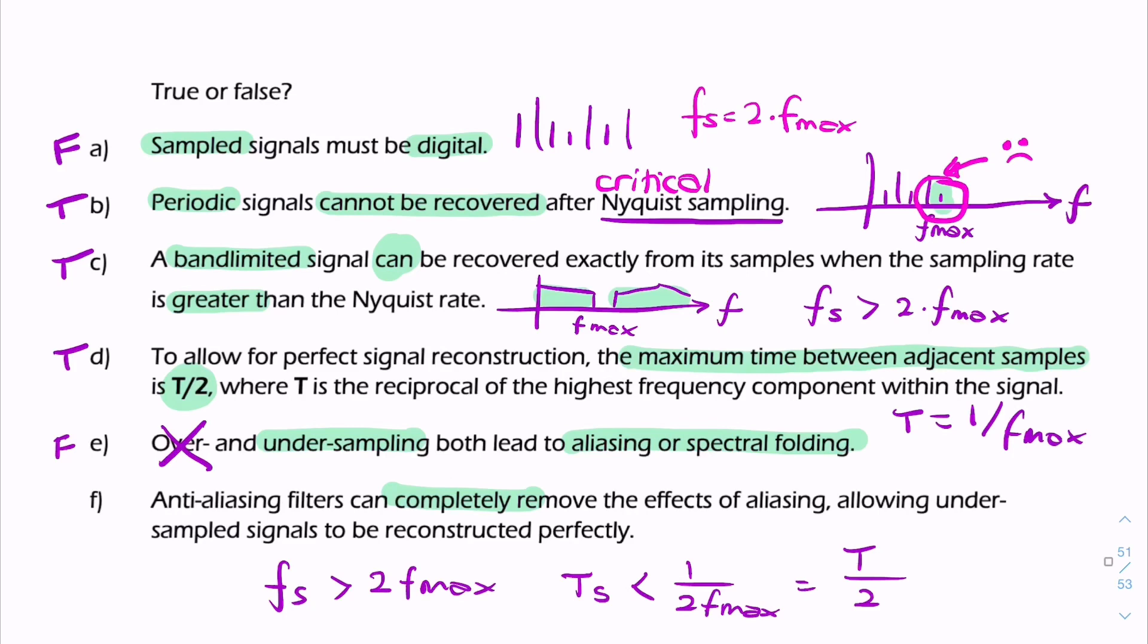If we apply the filter before sampling, then we can avoid aliasing happening. And if we apply it after under-sampling, then we can remove the portion of the spectrum that's been affected. We haven't removed the effect of aliasing. We've simply removed the portion of the spectrum that's been affected. So anti-aliasing can never completely remove the effects. It can somehow avoid or mitigate these effects.